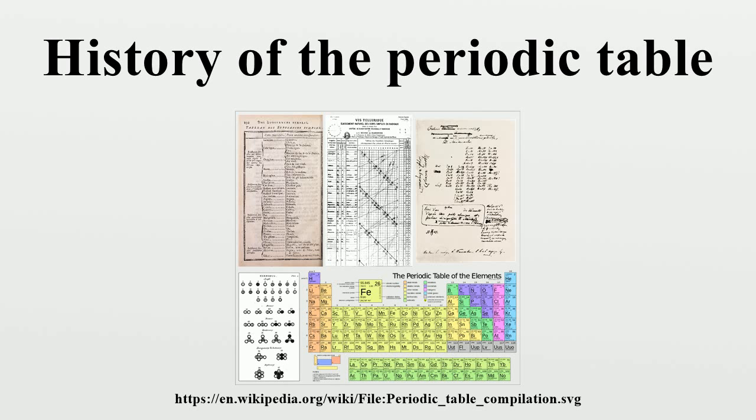Newlands noted that many pairs of similar elements existed, which differed by some multiple of eight in mass number, and was the first to assign them an atomic number. When his Law of Octaves was printed in Chemistry News, likening this periodicity of eights to the musical scale, it was ridiculed by some of his contemporaries. His lecture to the Chemistry Society on 1 March 1866 was not published. The Society defended their decision by saying that such theoretical topics might be controversial.